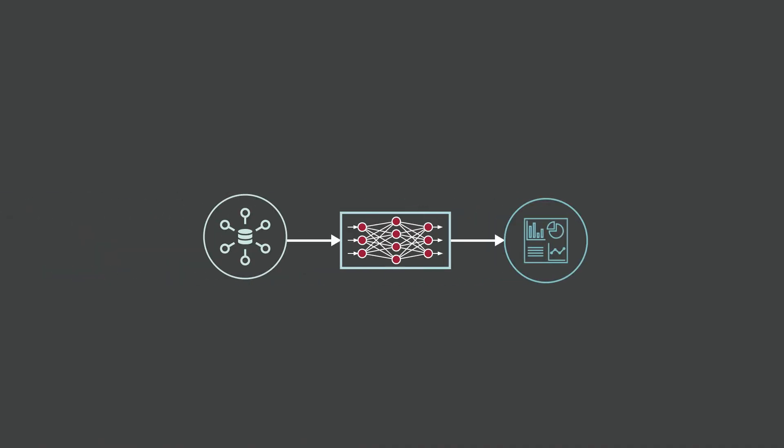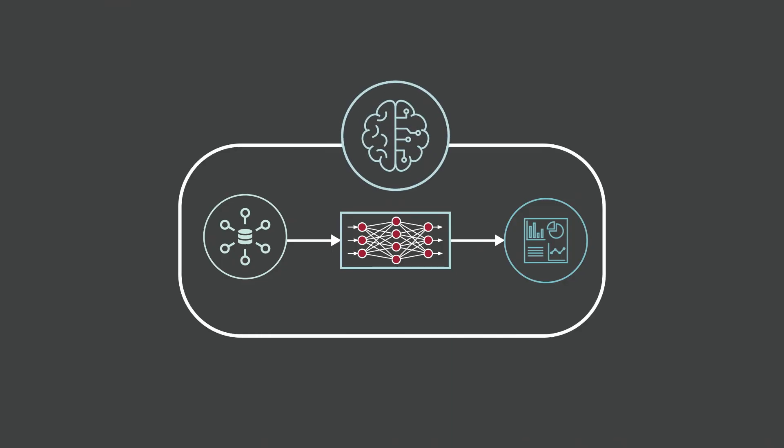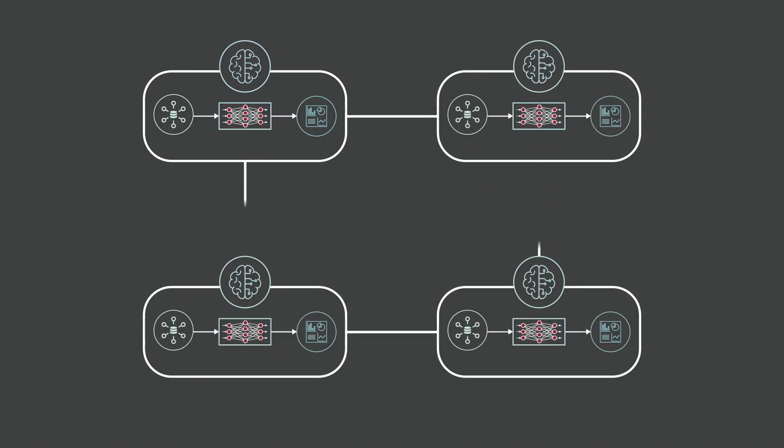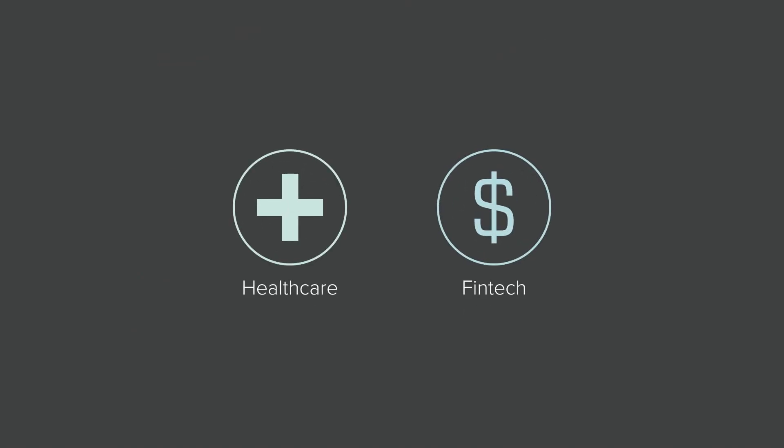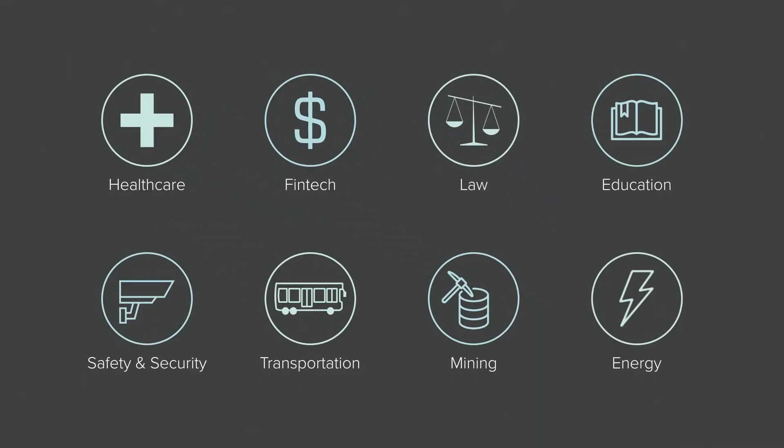So how do we get to decentralized AI? The big challenge is to stimulate research into how we create localized AI that's good for one or two particular tasks, and collectively they become better. In areas like healthcare and fintech, people understand this because health data and financial data is some of the most private data, so there's a lot of momentum behind solving decentralized AI in those two sectors. But in reality, decentralized AI is applicable in many areas.